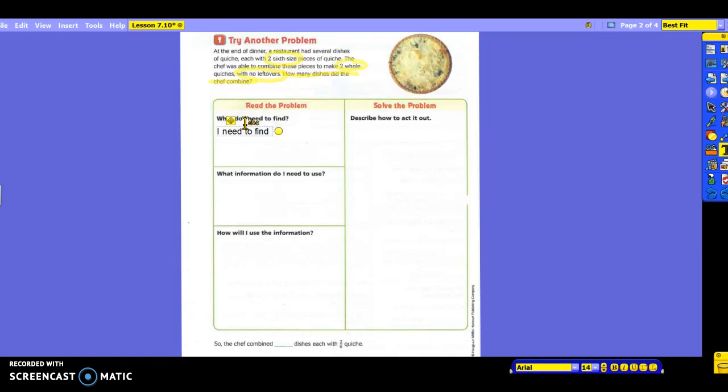Don Maurice? Well, but you need to tell me how many pieces or what size of pieces. So how many what? What am I looking for? Two-sixths pieces of quiche. The chef combined. What's he combining them into? Two whole quiches. And what do we not want to forget? Without leftovers. Everybody see that okay? I need to find how many two-sixths pieces of quiche the chef combined into two whole quiches without leftovers.